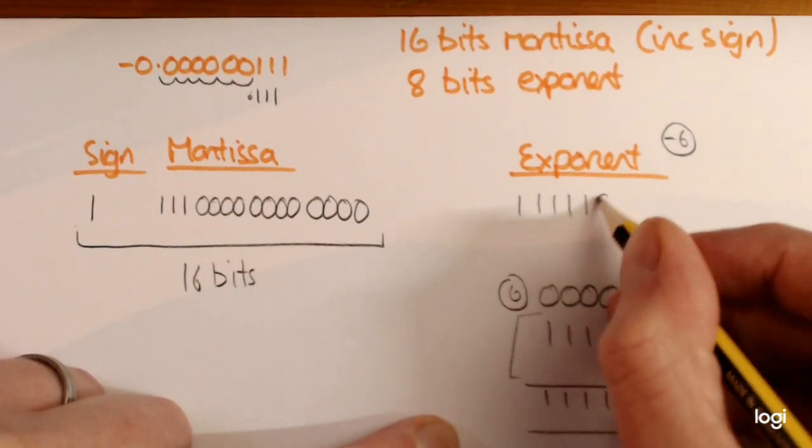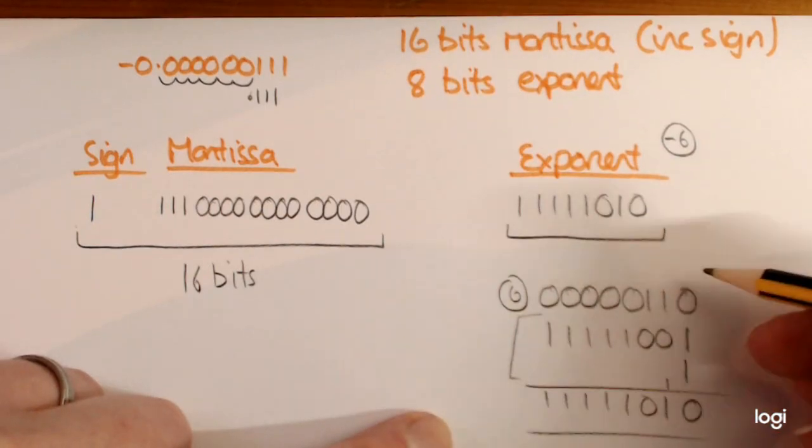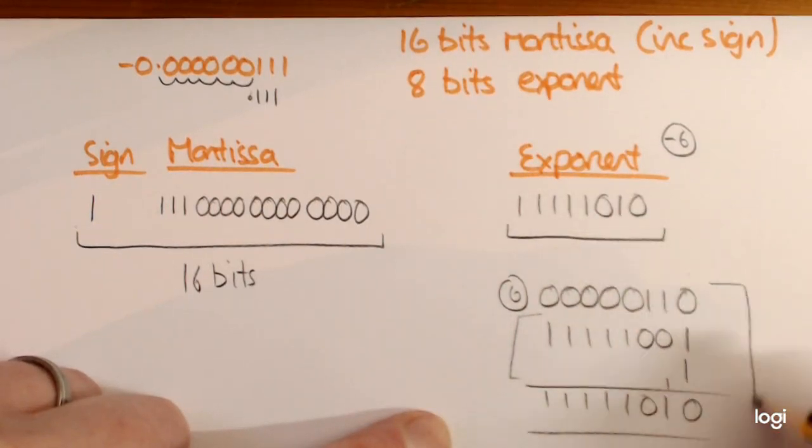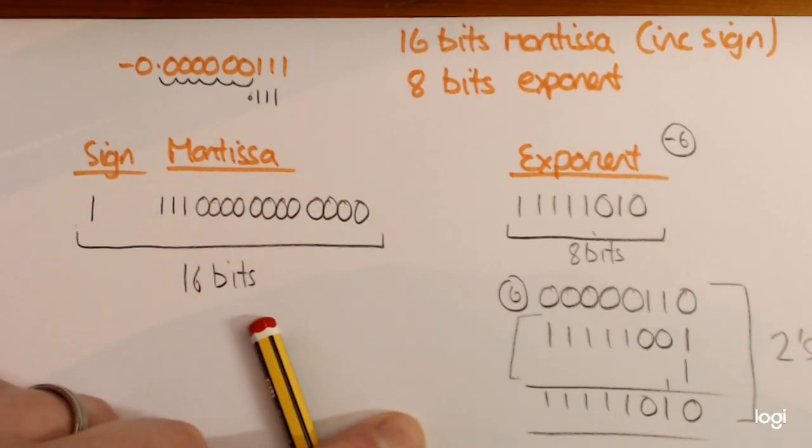So if you're moving the decimal point to the right, then it's a minus exponent, so you have to do this wee extra bit. And remember, that's your 2's complement, and that's your 8 bits there. So hopefully that helps you.